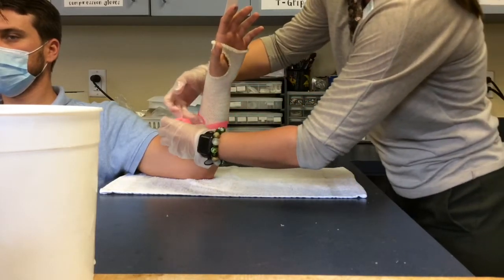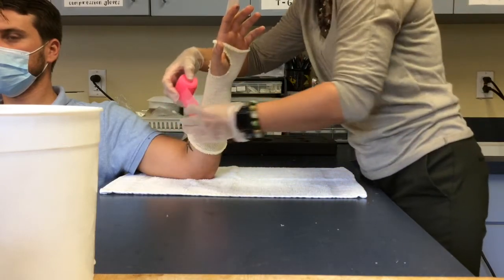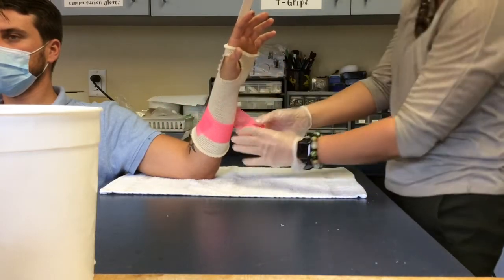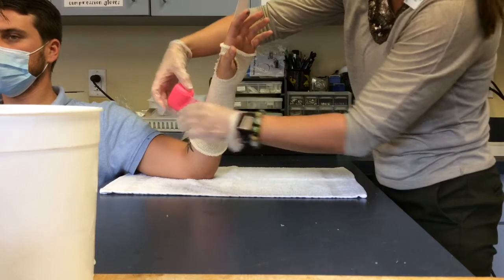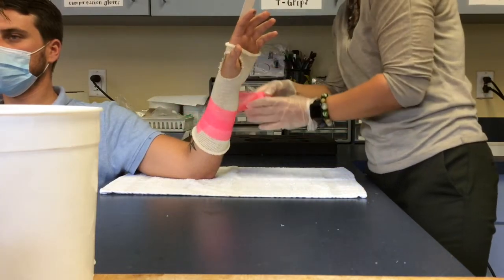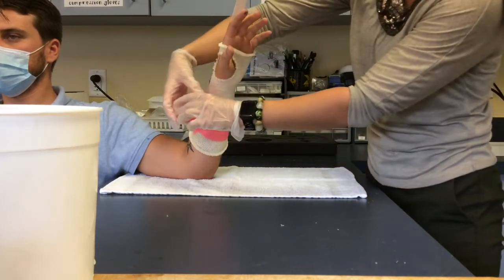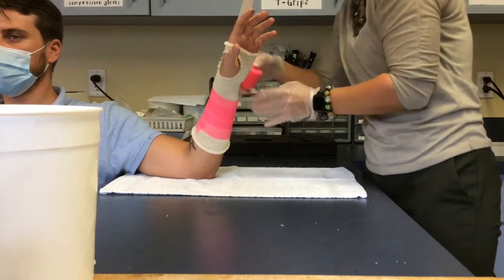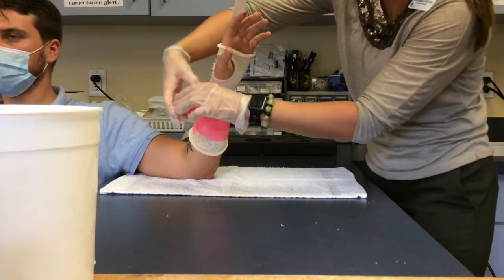When you are wrapping, overlap by about 1 inch circumferentially and you do not need to pull the delta cast too tight around the patient's forearm.